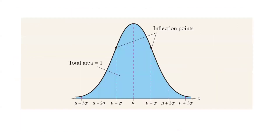We can also visualize the normal distribution this way. On the horizontal line, the balancing point is at the mean or mu. We can use the mean, mean plus/minus one standard deviation, mean plus/minus two standard deviations, and mean plus/minus three standard deviations to divide up the horizontal line into nicer sections.